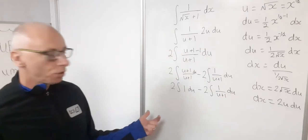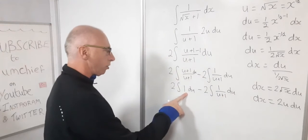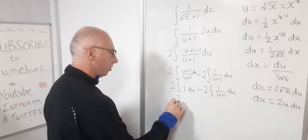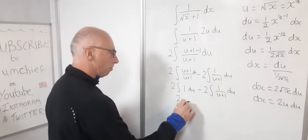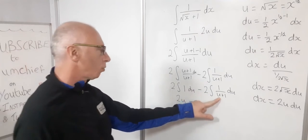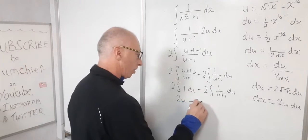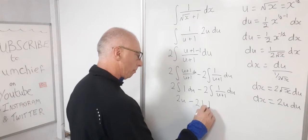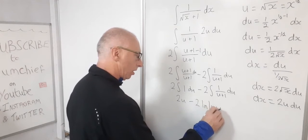Let's go straight in for the integration. So with respect to u, this is now 2u minus, then this one we know is the natural logarithm of u plus one. So two times the natural logarithm, don't forget the absolute value, u plus one.